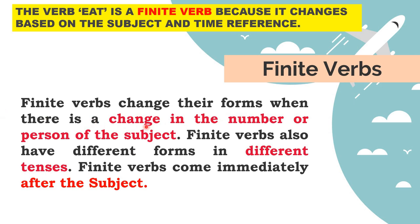Finite verbs change their forms when there is a change in the number or the person of the subject. Finite verbs also have different forms in different tenses. Finite verbs come immediately after the subject. For example: 'I eat, they eat, he eats' - the verb changes with person. If a verb comes immediately after the subject, changes according to the number and person of the subject, and changes according to tense, then it is called a finite verb.